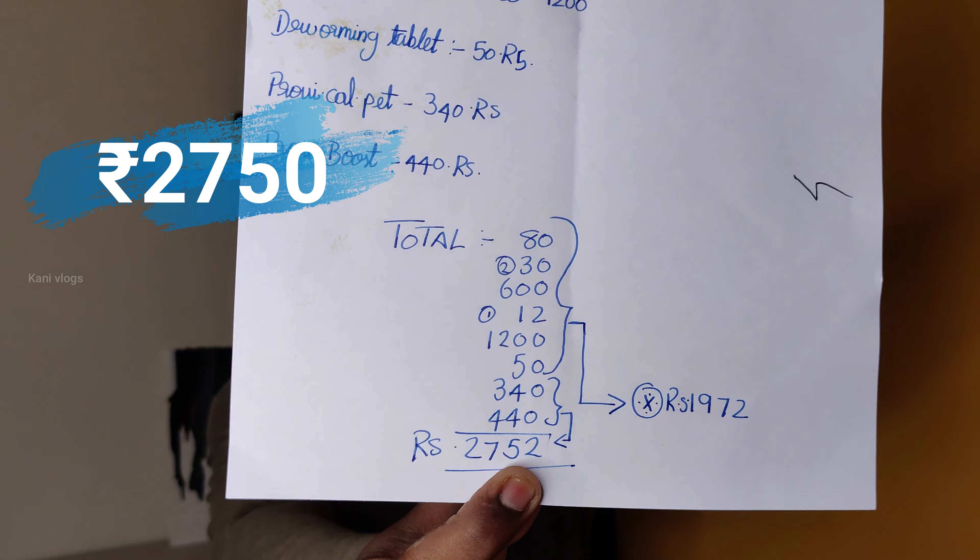To summarize the line items: carrot, potato, half liter milk, egg, rice - these are low or no cost. Curd, de-worming tablet, ProV Cal Dot Pet, and ProV Boost are the main expenses. The total is 2,750 rupees for a month. With ProV Cal Dot Pet and ProV Boost averaged over 3 months, it comes to around 1,972 rupees per month.